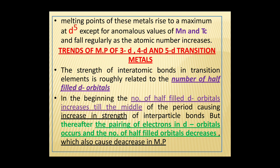The strength of inter-atomic bonds in transition elements is roughly related to the number of half-filled D orbitals. At the beginning of the period, the number of half-filled D orbitals increases until the middle of the period, causing an increase in the strength of inter-atomic bonds. After that, pairing of electrons in D orbitals occurs and the number of half-filled orbitals decreases, which also causes a decrease in melting point.